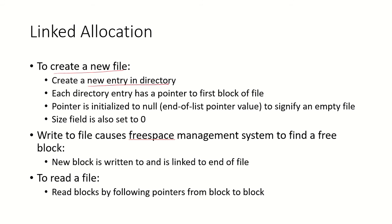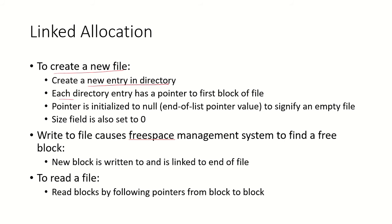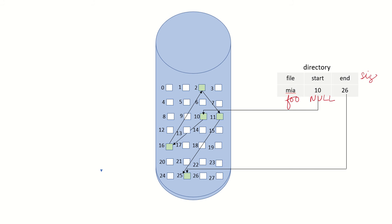Whenever a new file is created, there will be a new entry in the directory. For example, a file called 'foo' will get a new directory entry, and since it has not yet been written to, the start address will be null — meaning the file has not been allocated space on disk yet. Each directory entry has a pointer to the first block; when a new file is created, that pointer is initialized to null, signifying an empty file. The size field is also set to zero.